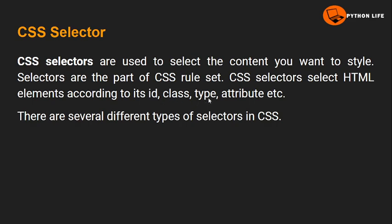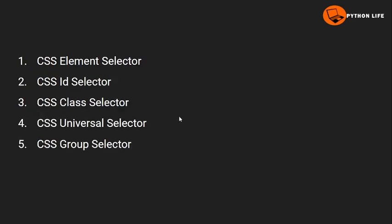There are different types of CSS selectors. We can select elements using different types of tags — by element name, ID, class, type, or attribute. Using these different types, we can apply CSS styles to the elements we want.